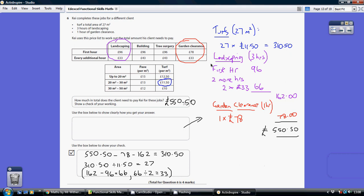Now, with regard to the landscaping, where the costs are here, we're told the first hour is £96 and then every additional hour is £33. So he's spent three hours landscaping. So that's the first hour of £96, then an extra two hours of £33 an hour, two lots of £33 is £66. So £96 for the first hour, £66 for the next two hours. That's a total of £162 for his landscaping.